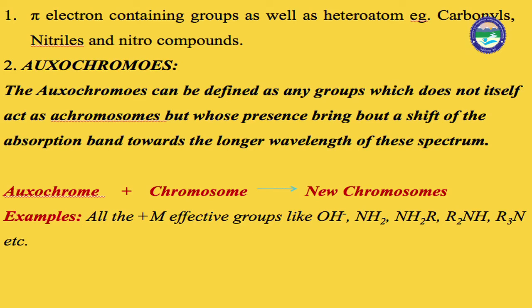When an auxochrome joins a chromophore, it generates a new chromophore and produces a specific color. So: auxochrome + chromophore = new chromophore. All +M and –M effecting groups (mesomeric effecting groups) such as –OH, –NH2, –NHR act as auxochromes. For example, benzene (colorless) is a chromophore. When NO2 group (auxochrome) is added, nitrobenzene shows a specific color — a new chromophore is formed.